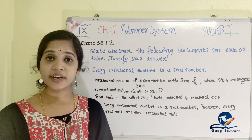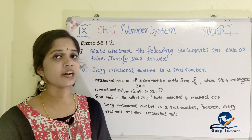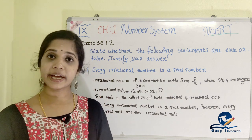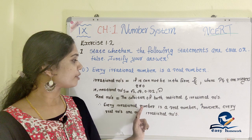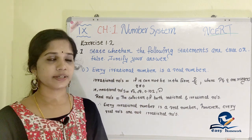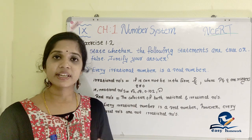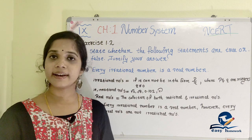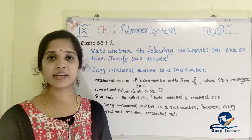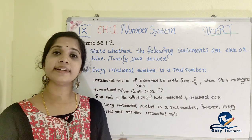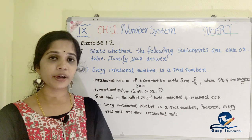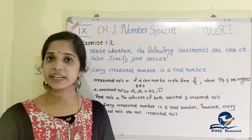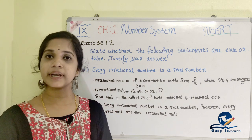What is an irrational number? If we use the p by q formula, a rational number can be expressed in p by q form where p and q are integers and q is not equal to zero. We can use the same condition for root 2, root 5, and 0.1025. The real number is the collection of both rational numbers and irrational numbers. So, every irrational number is a real number — that is true.